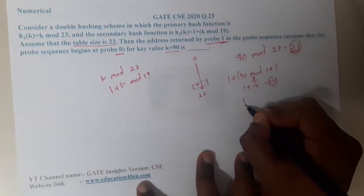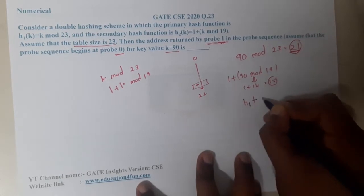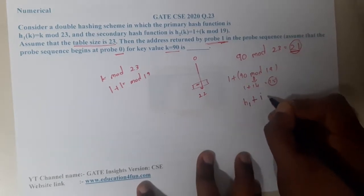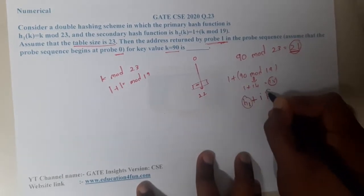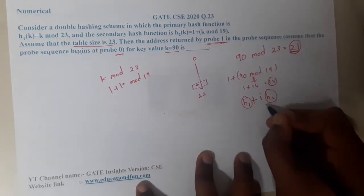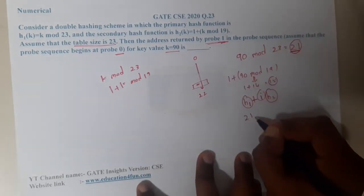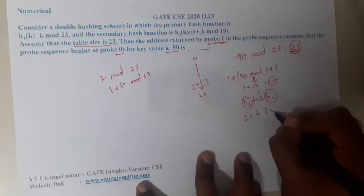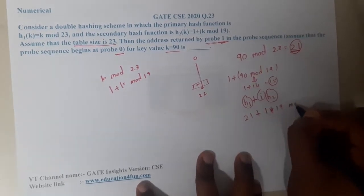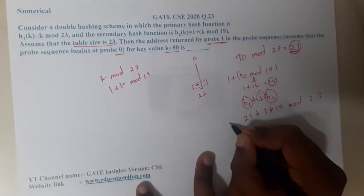It is asking for probe 1. If you remember the formula, it is nothing but h₁ + i × h₂. These are hash 1 and hash 2 functions. i value is 1, so that is 21 + 1 × 15 mod 23.